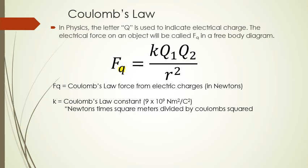The units of K are newtons times meters squared divided by coulombs squared. That's because when you plug those units into K and multiply by two electrical charges (the q's), it cancels out the coulombs squared. Then when you divide by the distance squared, that cancels out the meters squared, and you're left with newtons — which is what force is. Those units exist to convert charge and distance into newtons, which is what we want.